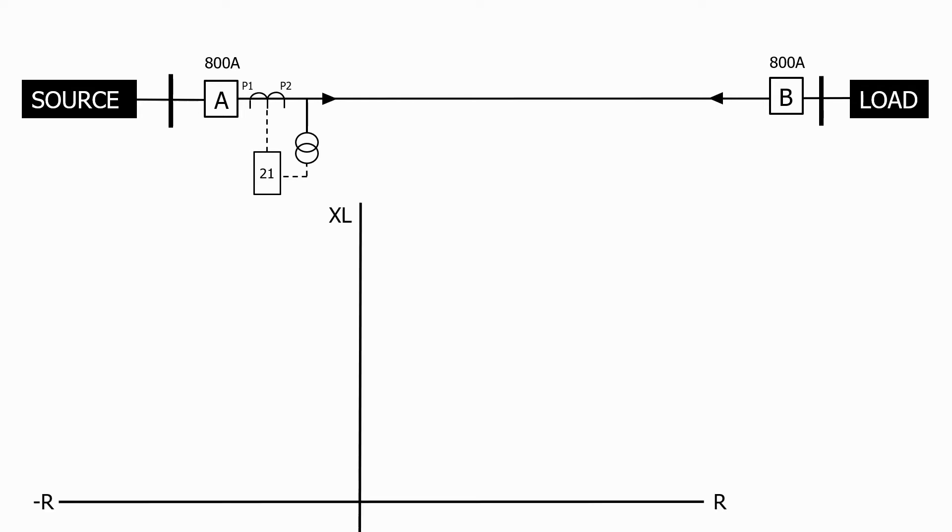Let's now focus on quadrant 1 as that's where the impedance relay will spend most of its time. Let's now energize the circuit. Power now flows from the source, through the line and onto the load and the relay is now measuring a combination of the line impedance and the load impedance. As we know, the load impedance is quite high and has a characteristic angle of about 20 degrees.